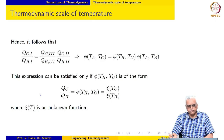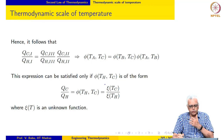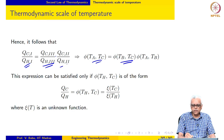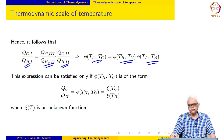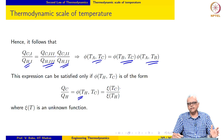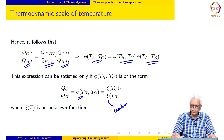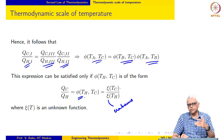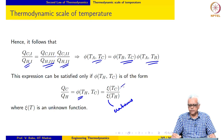This relationship can be satisfied if and only if the unknown function phi takes the form Xe(TC) divided by Xe(TH), where Xe is an as-yet unknown function. So QC over QH must be of the form Xe(TC) divided by Xe(TH), making the functional dependence on reservoir temperature clear.